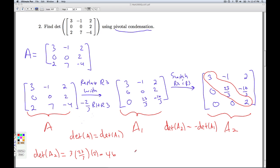I get the fact that the determinant of A is the opposite of the determinant of A2, negative 46, which checks with my answer from number 1. So that'll do it for number 2.